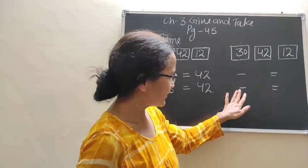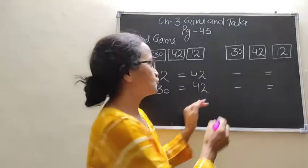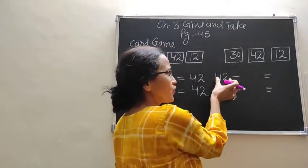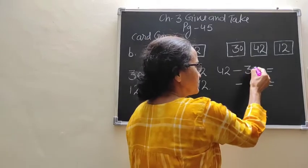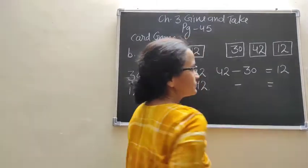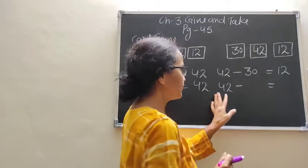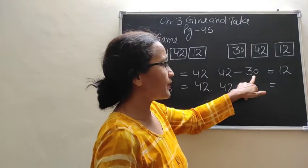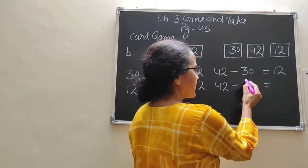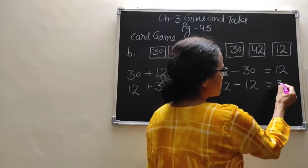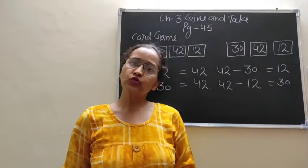Now here is a sign of minus. In the negative sign, you have to take the biggest card number, that is 42. So right here: 42. After that, place a card of 30, and the remaining card is 12. On the second arrangement, again take the biggest card number: 42. This time write 12 in the second position, and the remaining card is 30. Similarly, you can take 3 numbers and play this card game.